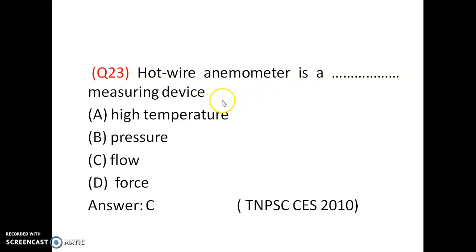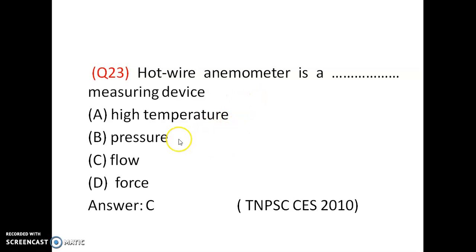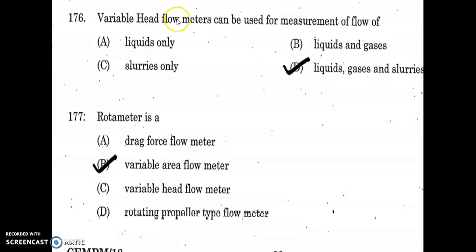Hot wire anemometer is a flow measurement device. It measures velocity — particularly wind velocity — and is used in wind turbines to measure wind velocity. If velocity is measured, you can find flow using Q = A × V. Hot wire anemometer will not measure high temperature, pressure, or force — it measures flow. Variable head flow meters can be used for measuring liquids, gases, and slurries. A rotameter is a variable area flow meter, not a variable head flow meter, because its cross-sectional area changes.